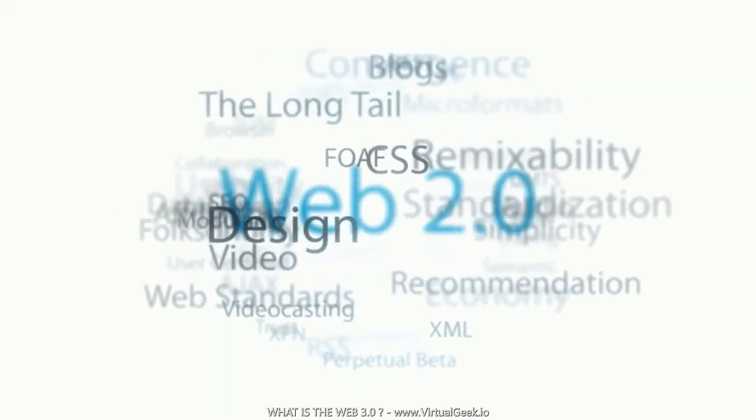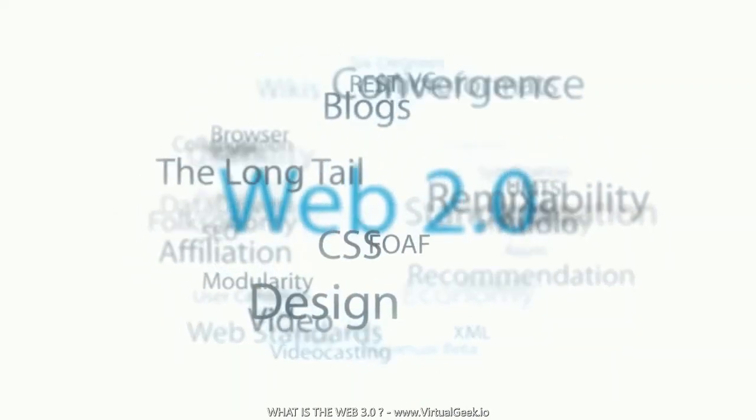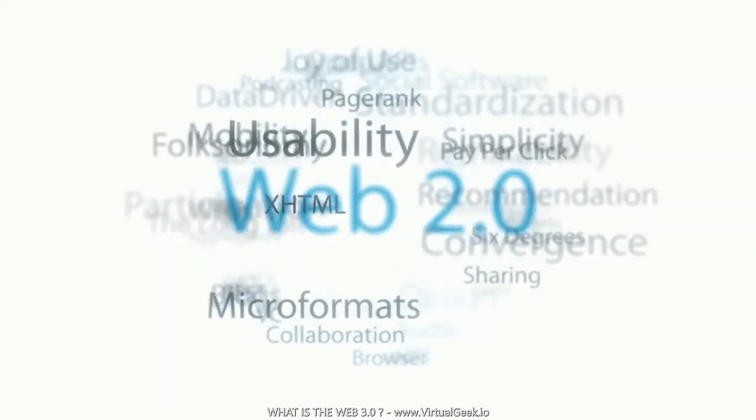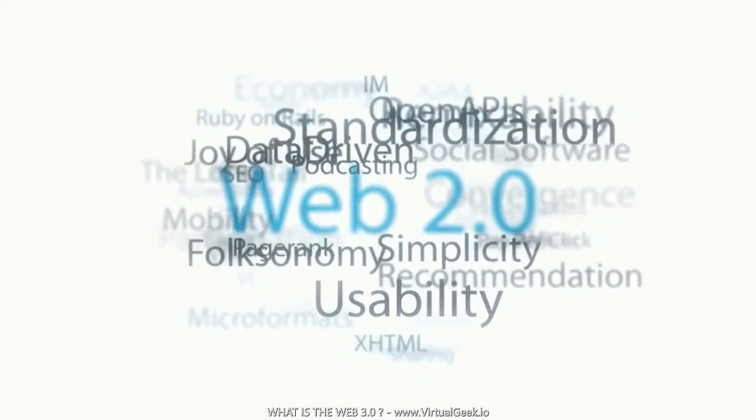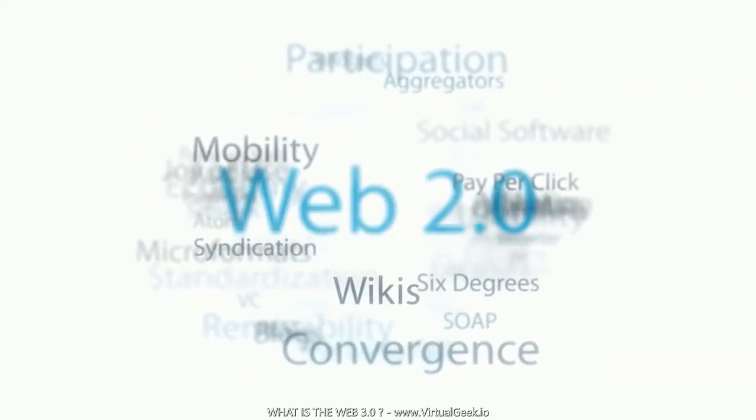The first generation of the worldwide web was a platform for publishing and sharing information. The second generation was a platform for e-commerce and online collaboration. The third generation is a platform for decentralized applications and smart contracts.